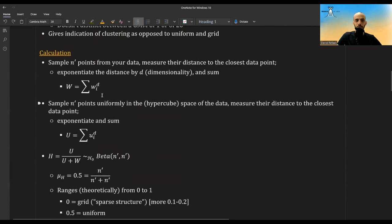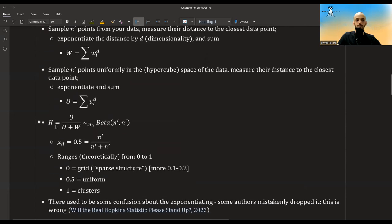Then you sample N' points, the same number of points, uniformly from the hypercube that encompasses your data. And again, you measure the distance to the closest data point. You exponentiate it and you sum it and we'll call it U. And then the Hopkins statistic is just U divided by U plus W. And of course here, the little u refers to the individual sample distance, as well as the little w refers to the sample distance. And the capital W and the capital U refers to the sum over all the N' points.